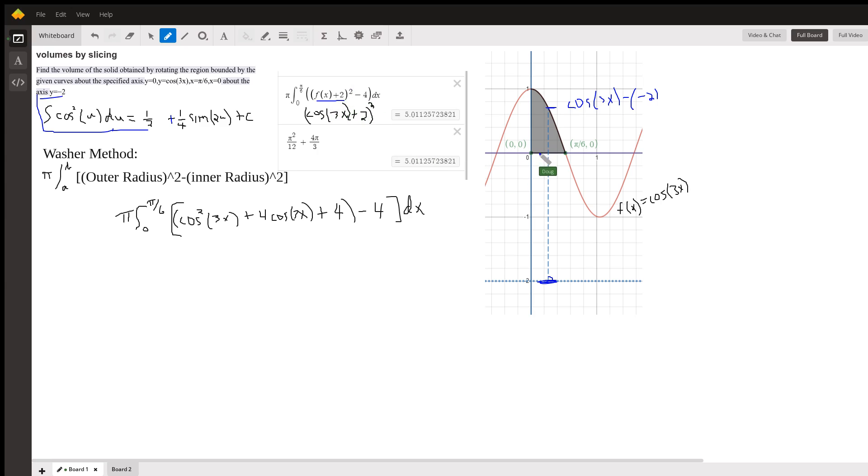The inner radius of the washer is the distance from here to here, which is 0 minus a negative 2, or 2. 2 squared is 4. That's where this 4 came from, the inner radius squared.